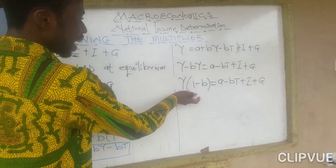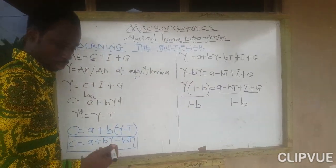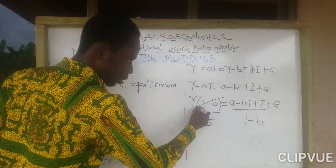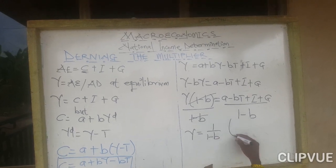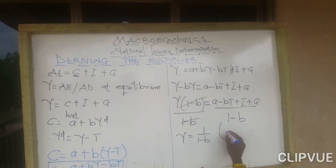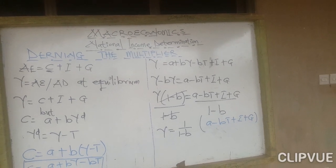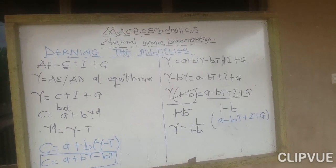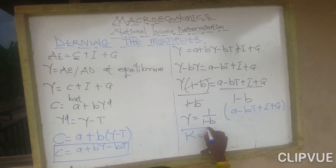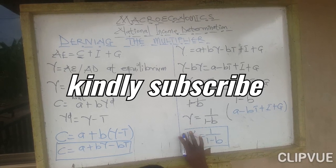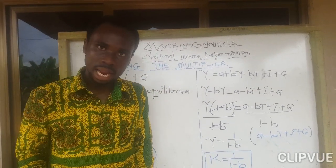Since we want to make Y the subject, we divide both sides by (1 minus b), giving us Y equal to 1 over (1 minus b) times the bracket (a minus bT plus I plus government spending). So our general multiplier k is equal to 1 over (1 minus b). This is the general multiplier for a lump sum tax.